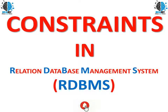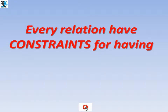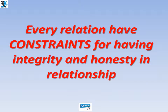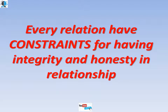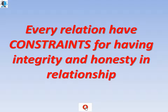You will be learning about several different types of constraints created in relational database management system RDBMS. Every relation has constraints for having integrity and honesty in a relationship — whether a human-to-human relationship or a relationship among different tables in a database. Every entity involved in a relationship that shares data is bounded with certain rules and regulations. These rules and regulations are nothing but constraints, and we have them to maintain the integrity of data sharing.